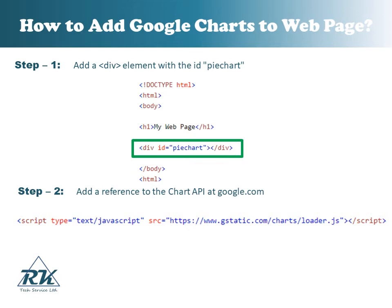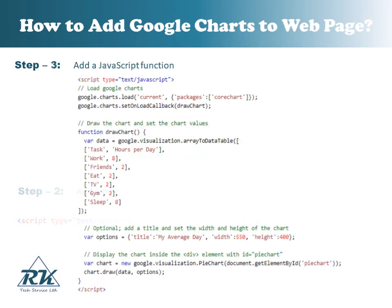The next step is to add the Google Chart API in your web page. Please find the sample script element with the src attribute, which contains the Google Chart API. This is a pre-built JavaScript file by Google. Finally, add a JavaScript function. Please find the JavaScript function here inside the script tag.